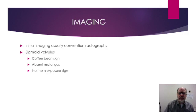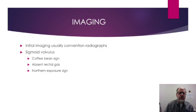We'll start off talking about sigmoid volvulus. There are three radiographic signs that can indicate this finding. One is called the coffee bean sign, due to the shape of the bowel. You will also see absence of gas within the rectum. And the northern exposure sign, which is a dilated loop of sigmoid colon that extends into the upper abdomen, typically above the transverse colon.